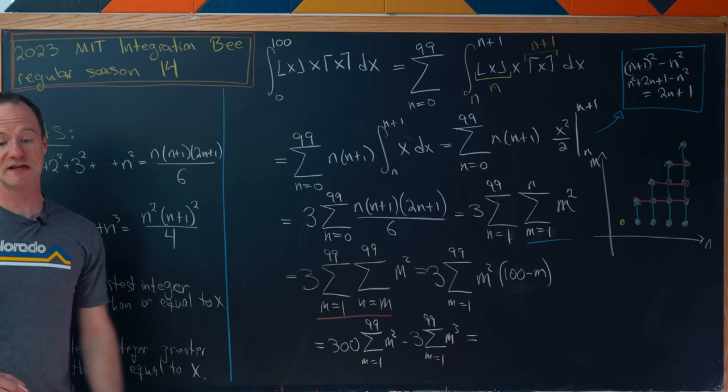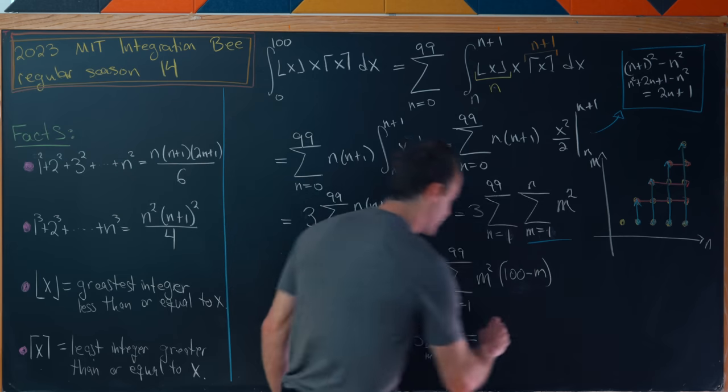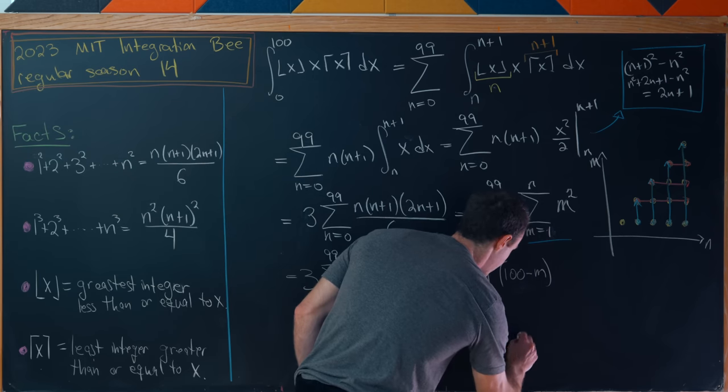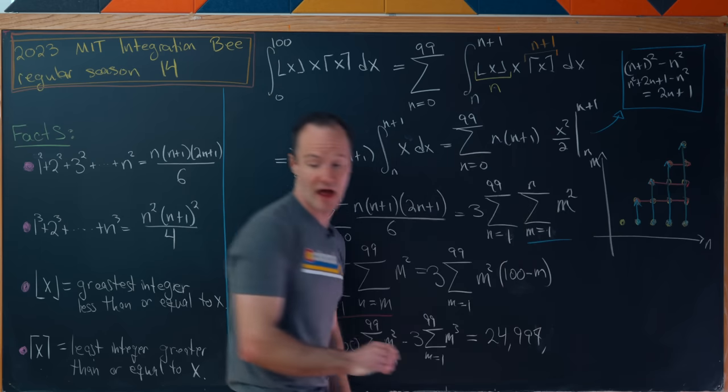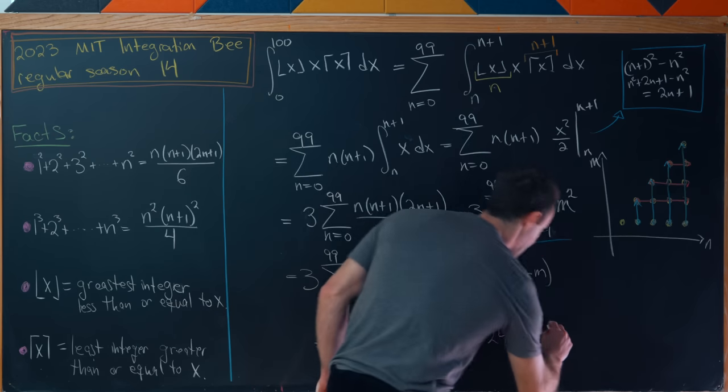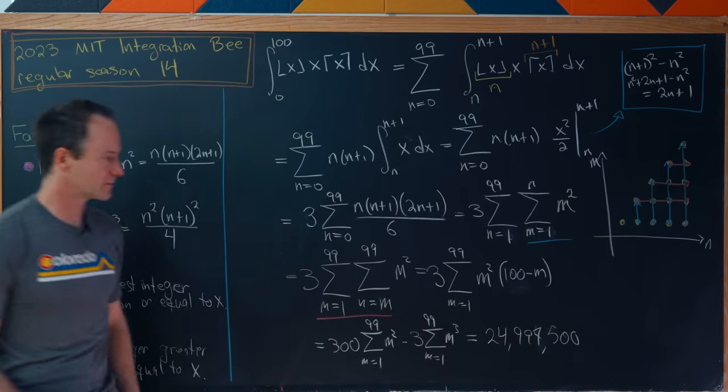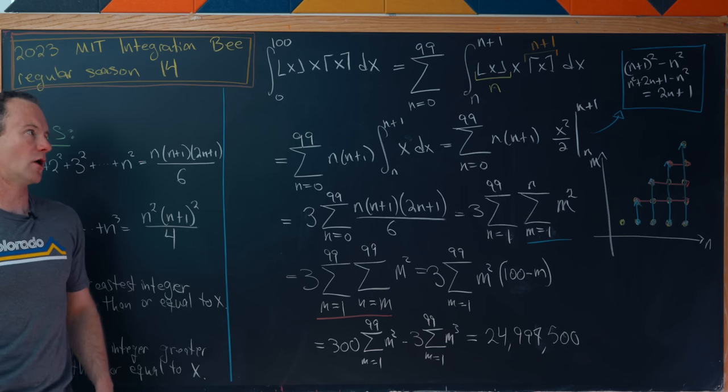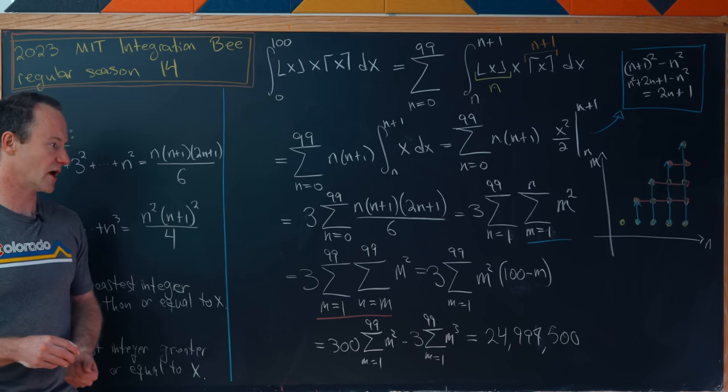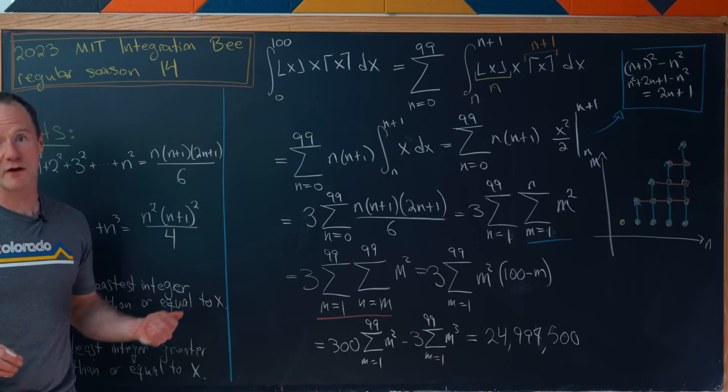What we'll end up with is 24,997,500. And that's the final answer. So now that we've done it this long but I think illustrative way, let's do it a shorter way with a trick.